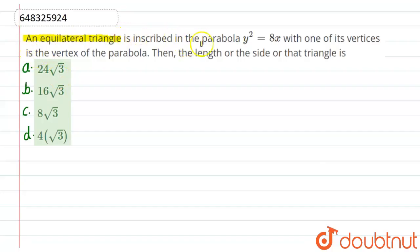triangle is inscribed in the parabola y² = 8x with one of its vertices is the vertex of parabola. Then the length of the side of that triangle is. So let's see the solution here.